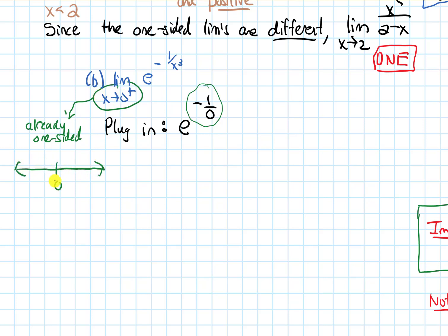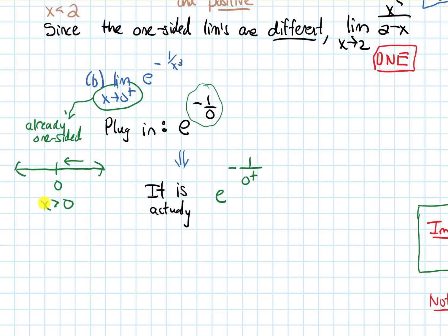I'll draw a number line with x approaching zero from the right, meaning x is a little bit bigger than zero. So when we plug in, we should write e to the negative one over zero-plus. Dividing one by something really, really small makes the result huge, and the negative sign in front makes that negative infinity. So we need to know what e to the negative infinity is.